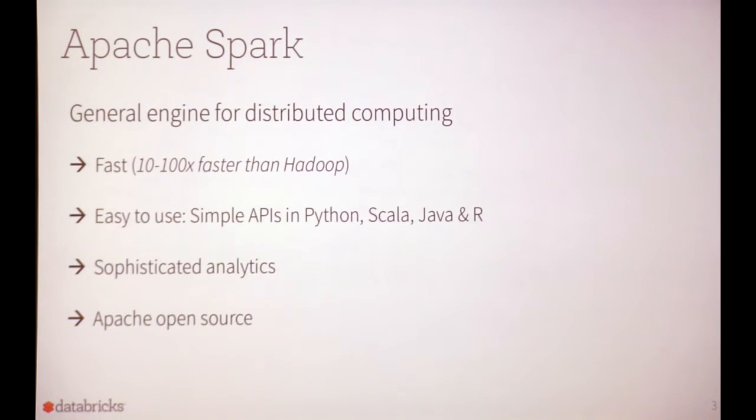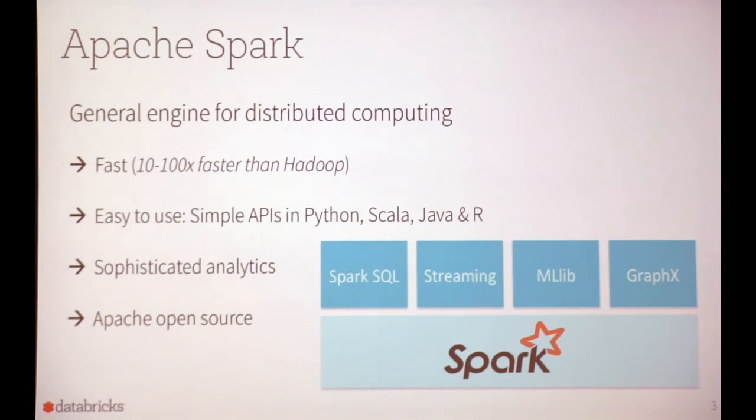Even though it's easy to get started, we also try to support sophisticated analytics, both via canned algorithms and via a simple programming model so you can build your own algorithms. A critical thing is that it's an Apache open source project — even though it started at Berkeley as a research project, it's now grown to include many contributors. On top of the core Spark distributed computing layer, there are higher level libraries: Spark SQL, Streaming, MLlib, and GraphX, which I'll get into more later.